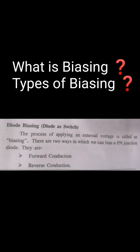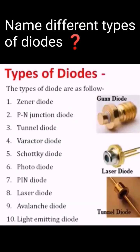What is biasing? Types of biasing. The process of applying an external voltage is called biasing. There are two types: forward biasing and reverse biasing.